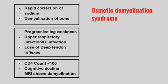Remember: high to low, your brain will blow — meaning you will build up intracranial pressure. If you correct the sodium too quickly from low to high, your pons will demyelinate. The next patient presents with progressive leg weakness, a recent upper respiratory tract infection or GI infection, and a loss of deep tendon reflexes. This is Guillain-Barré syndrome.